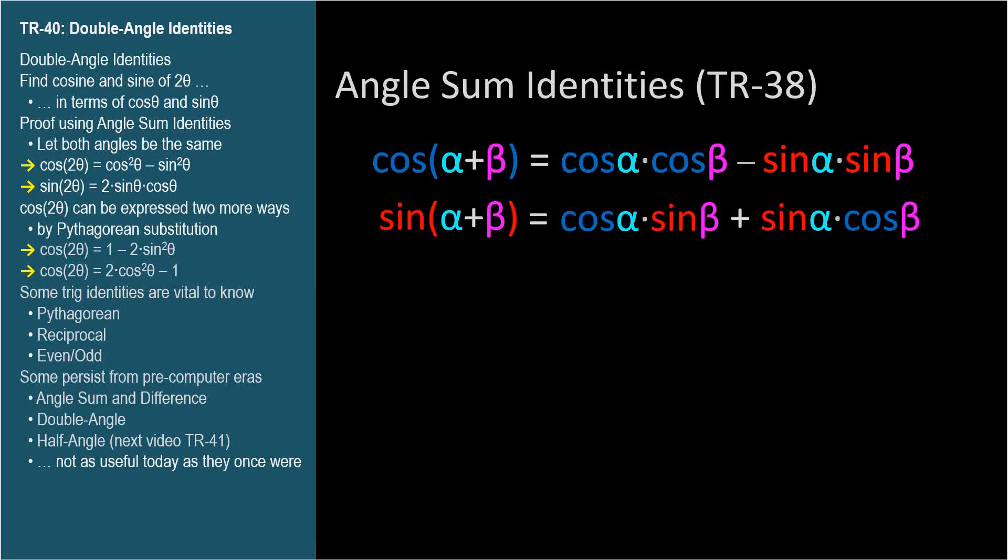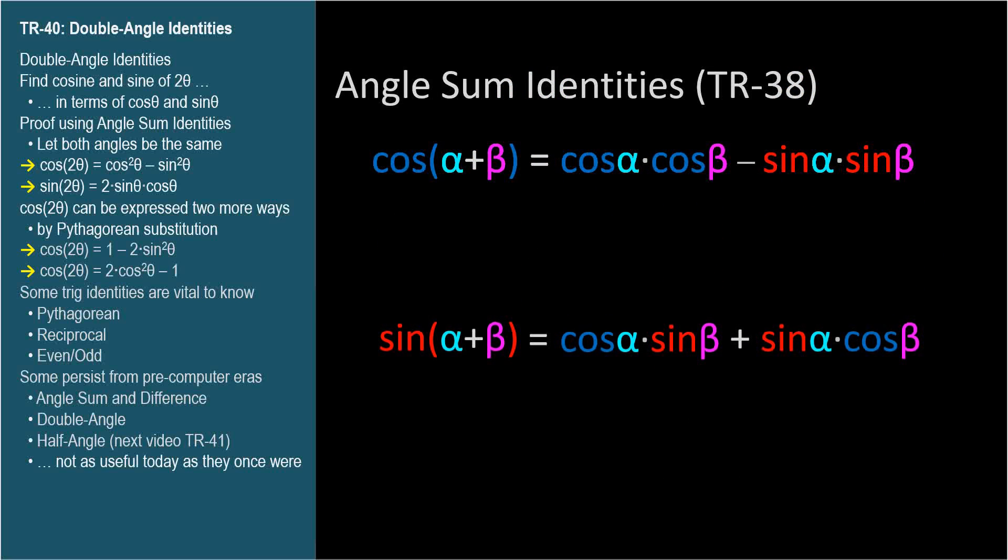Here are the angle sum identities from TR-38. Since cosine 2θ can be expressed as cosine θ plus θ, we can use the angle sum identities and consider both angles to be θ.